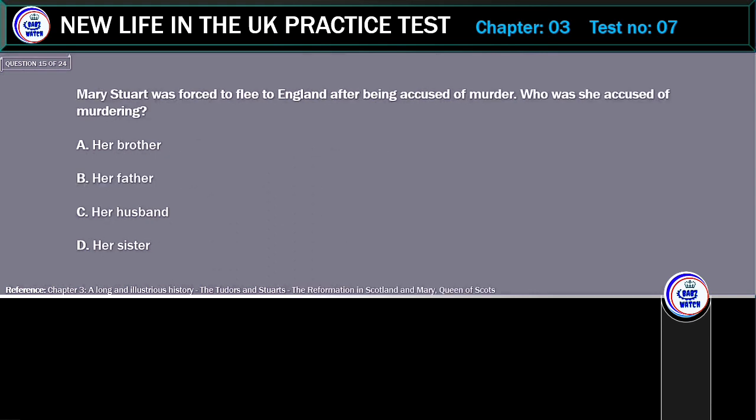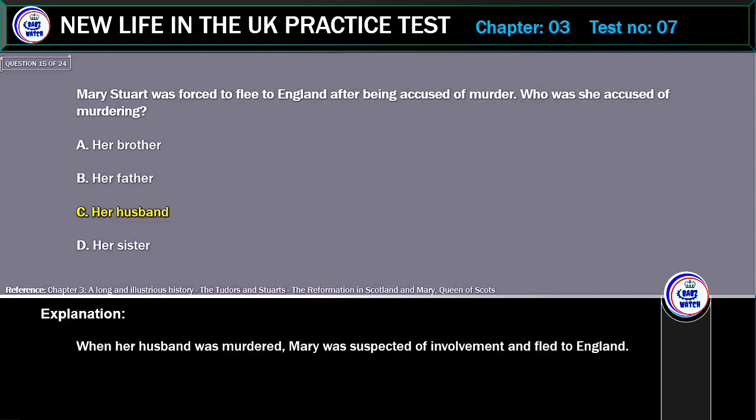Mary Stewart was forced to flee to England after being accused of murder. Who was she accused of murdering? A. Her brother. B. Her father. C. Her husband. D. Her sister. Correct answer: Her husband. Explanation: When her husband was murdered, Mary was suspected of involvement and fled to England.